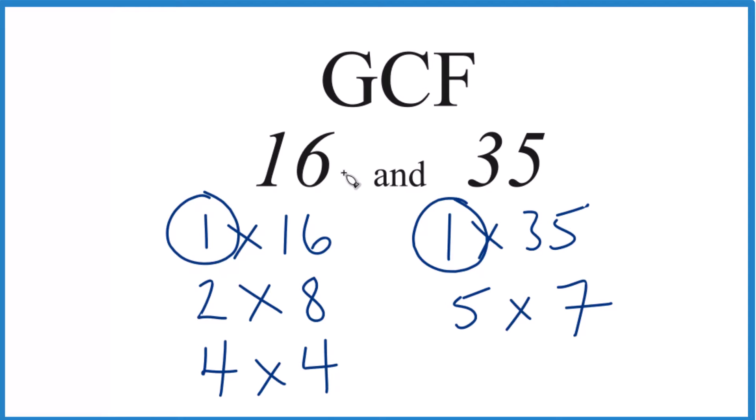So in answer to that question, the GCF for 16 and 35 is just 1. There are other ways to do this. You could use prime factorization, but unless you have a pretty big number, this works pretty well.